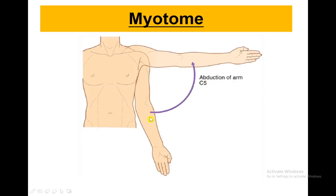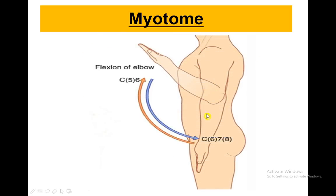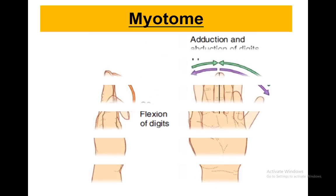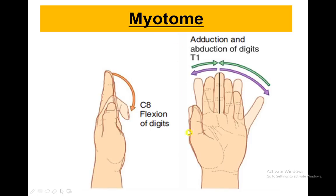Talking about the myotomes: for abduction of the arm at the shoulder joint, we check C5. At the elbow joint for flexion and extension, we check C6, C7, and C8 — flexion is C5 and C6. For C8, we check by testing flexion of the digits. For T1, we check abduction and adduction of the digits.